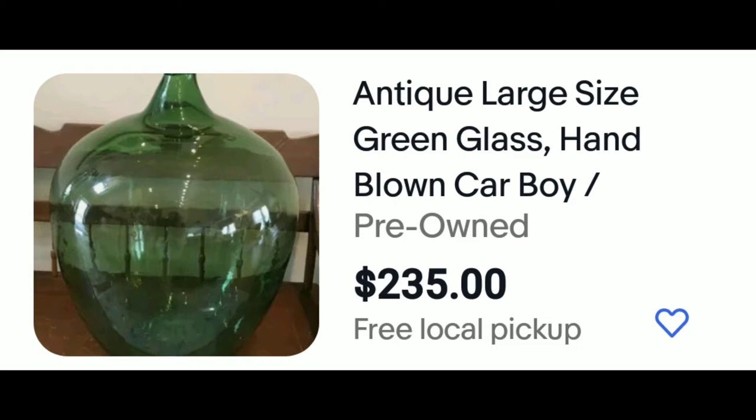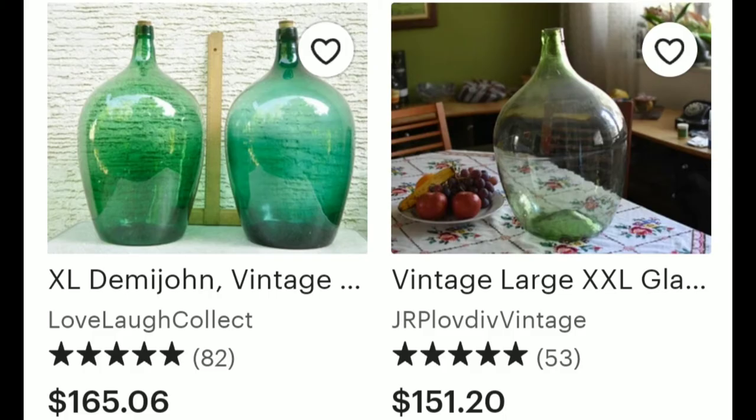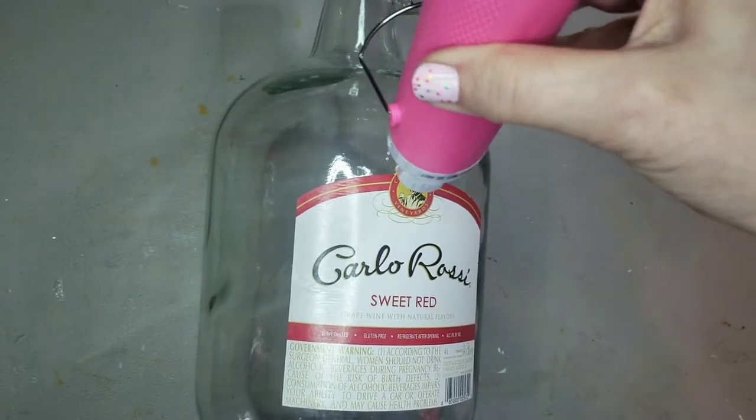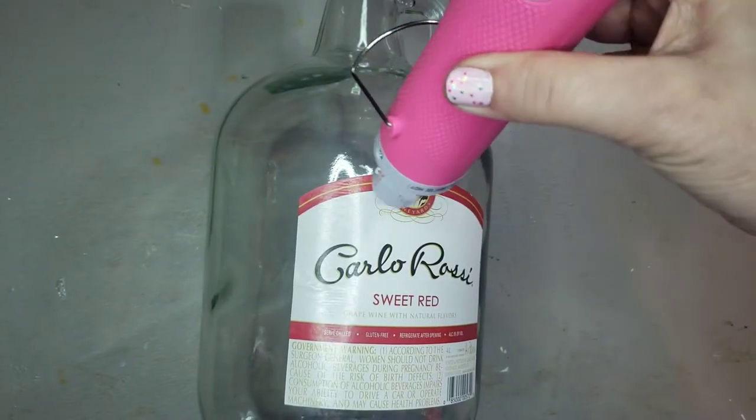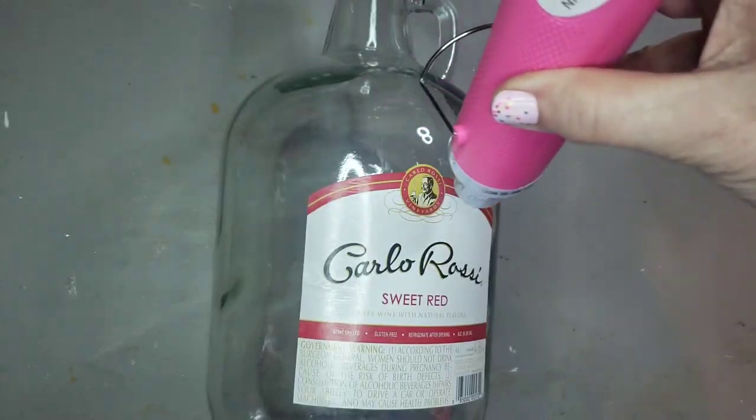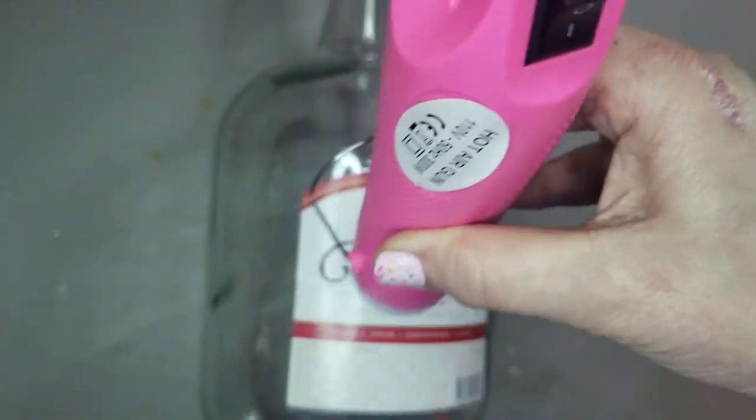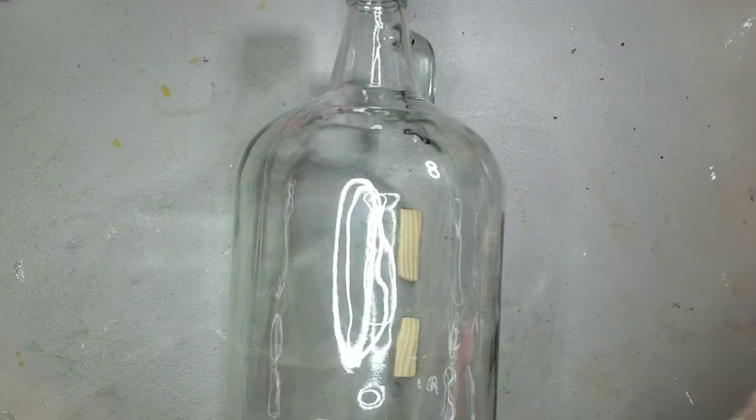The more popular Demi John jugs have either a light green or light blue tint to the glass color and I want to mimic that and I'll try the green. I heated up that label so it would come off easier. It kind of heats up the adhesive and makes it turn loose so you don't have so much of the stuff to scrape off afterwards.